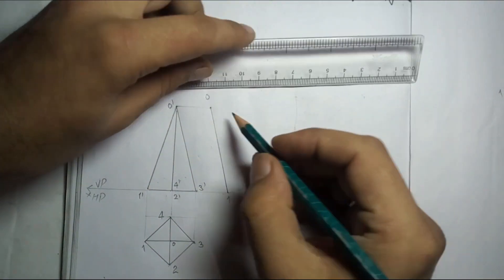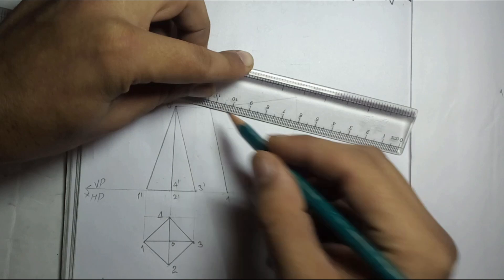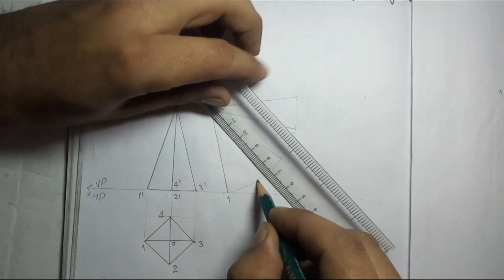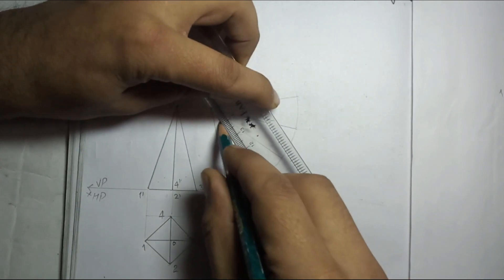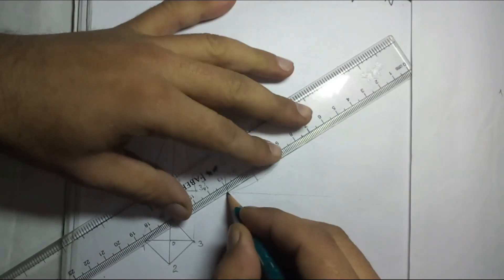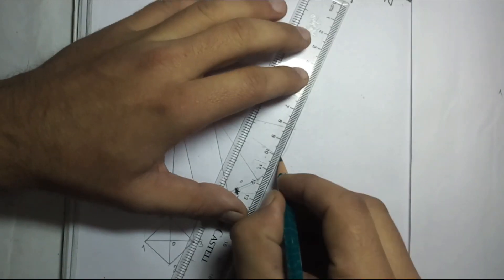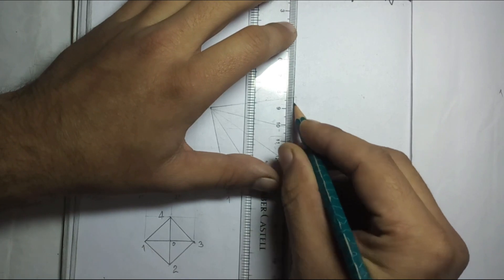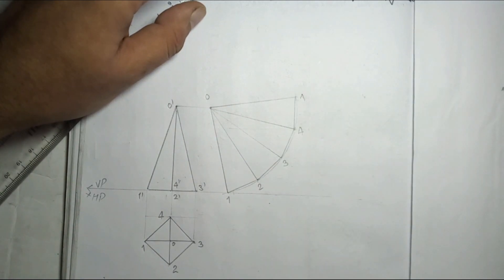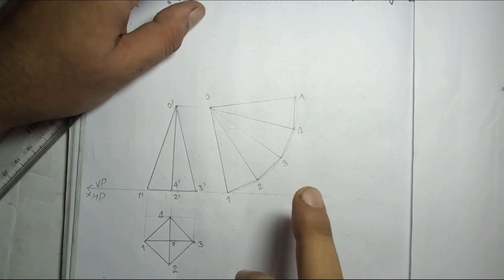Now join all the marked points to the apex O with straight lines — like this. The arc is light, it should be drawn lightly. Join the corners of the base edges as straight lines using a scale, opening them out like this. So you have one, two, three, four and again one. This is the development of the square pyramid — this is the front view, this is the top view, and this is the development of surface.